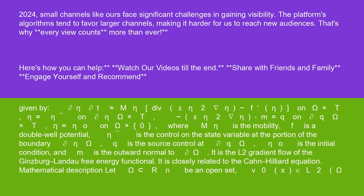f is a double-well potential, η̄ is the control on the state variable at the portion of the boundary ∂ηΩ, q is the source control at ∂qΩ, η₀ is the initial condition, and m is the outward normal to ∂Ω.